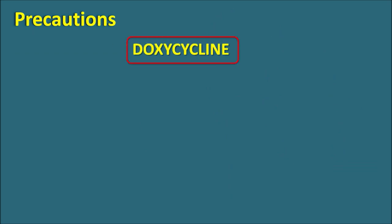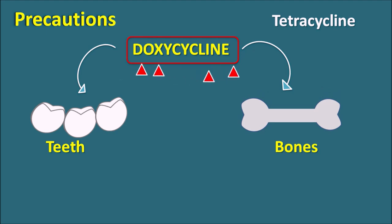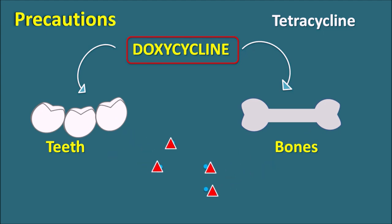A second important precaution is that doxycycline, being a tetracycline, can form a complex with calcium and thereby affect the teeth and bones. When administered, the drug can be deposited in teeth and bones, forming a complex with calcium such that calcium is removed from these tissues. Removal of calcium from teeth results in yellowish discoloration, and the bones become demineralized, resulting in decreased bone strength.